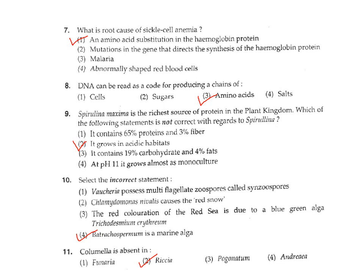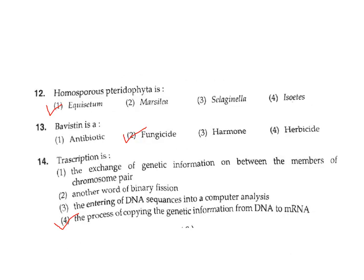Question 11: Columella is absent in which organism? Columella is absent in Riccia; in the other three — Funaria, Pogonatum, and Anthoceros — it is present. Question 12: What is a homosporous pteridophyte? A homosporous pteridophyte is Equisetum, in which all spores are of the same type.